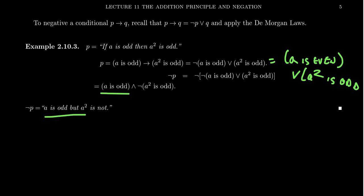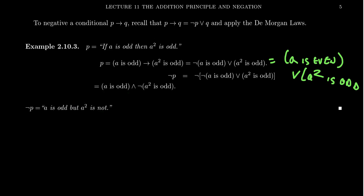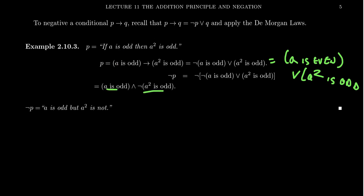You might say something like 'A is odd, but A² is not.' We mentioned before that 'but' often means 'and' when there's a contrast in play. This actually makes sense because the only way a conditional statement is false is if the premise is true and the conclusion is false — which is exactly what we're expressing via the DeMorgan laws.